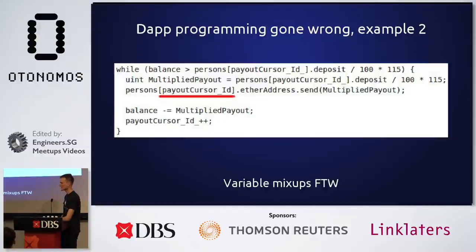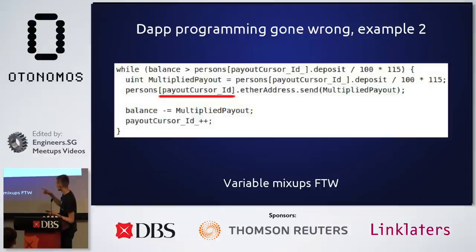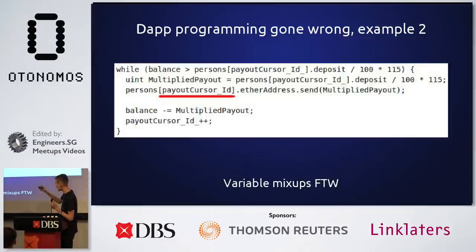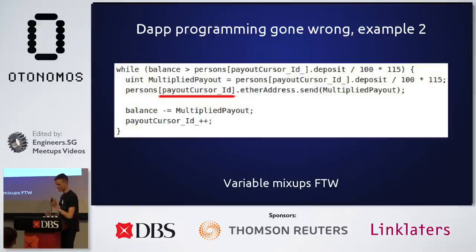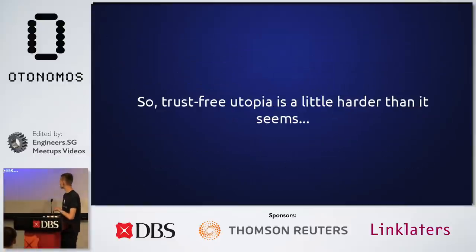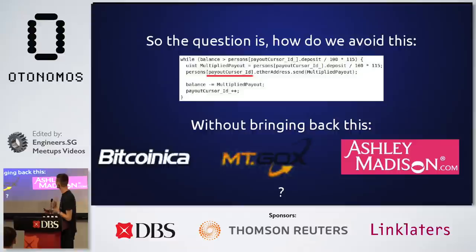An attacker simulated transactions locally over and over, published transactions only when simulations showed they would win, and drained the casino of almost all its money. Another smart contract pitfall: a contract paying out a list of people had two variables — 'payout_cursor_id_' and 'payout_cursor_id' with no underscore — two different variables. 'payout_cursor_id_' gets incremented each time money is sent, the other does not. The contract looks like it pays everyone but in reality it just pays the first person over and over again — and the first participant is totally not the contract creator.